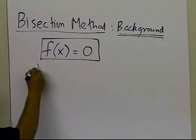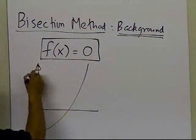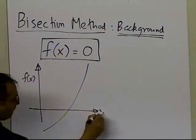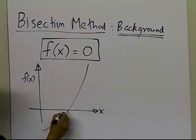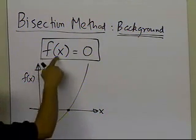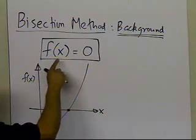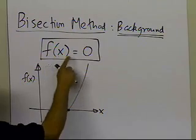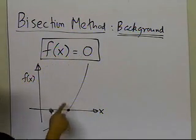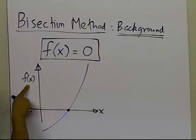From a graphical point of view, you have a function f of x given to you as a function of x, and what you want to do is find out where it crosses the x-axis. That sets up this equation — you are trying to find the root of f of x equal to 0, or in other words, find the zero of this function, which is the same thing.